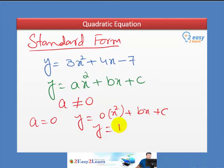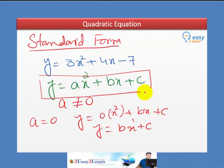It will become a linear equation. So, that's why for quadratic equation, a cannot be 0. So, this is called a standard form.